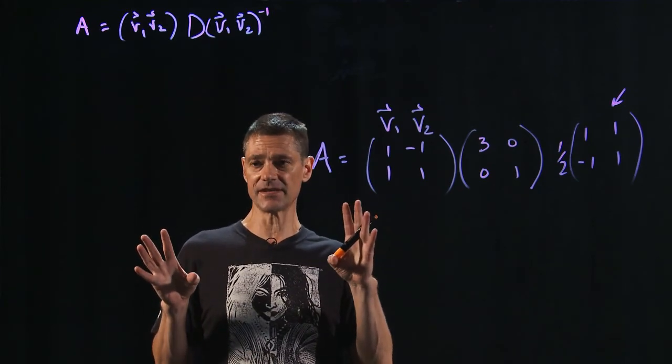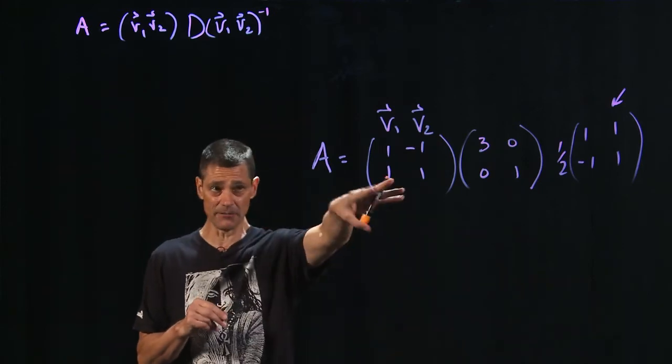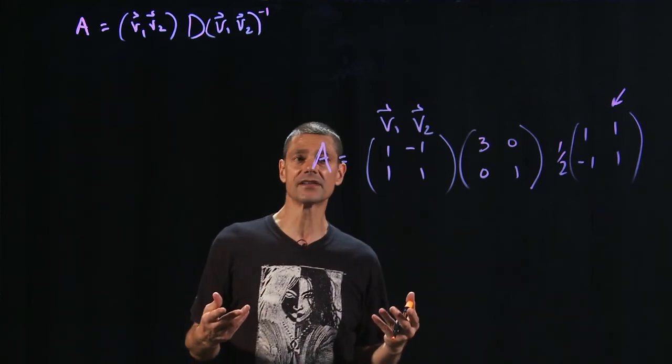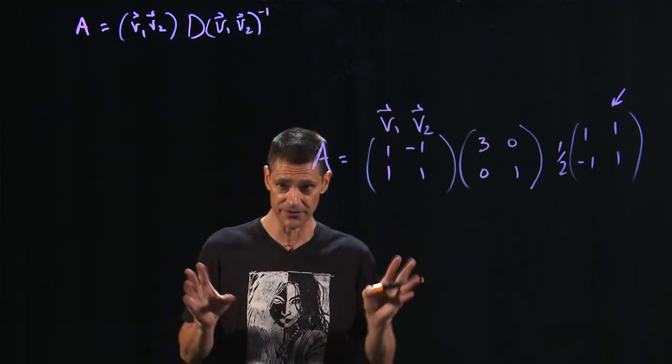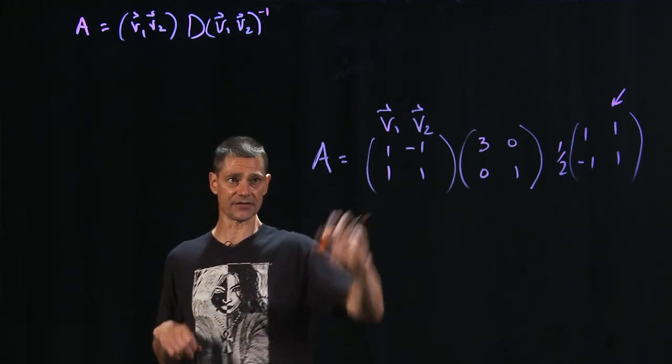There's something called an SVD, single value decomposition, which works for any matrix that has a similar kind of breakdown. But for a square matrix, sometimes when conditions are right, especially when they're symmetric and real and there's other nice things, you can break this matrix up into something that looks like this.